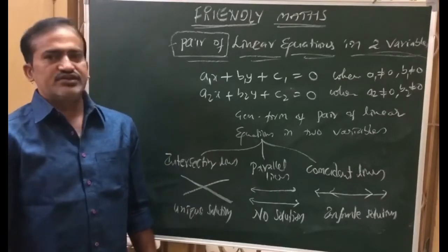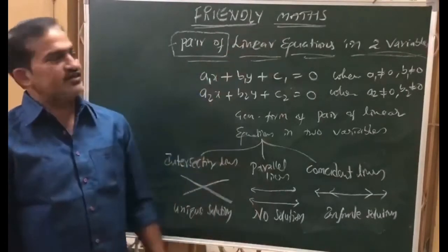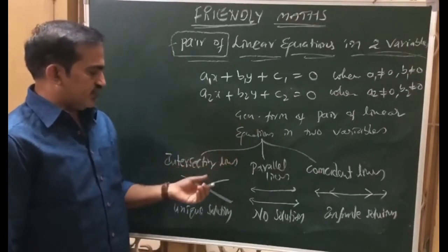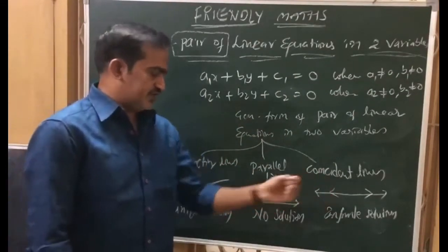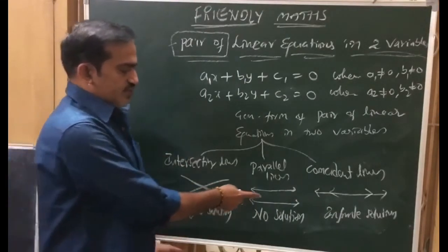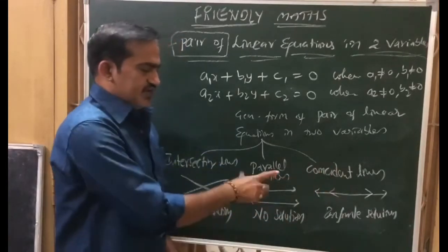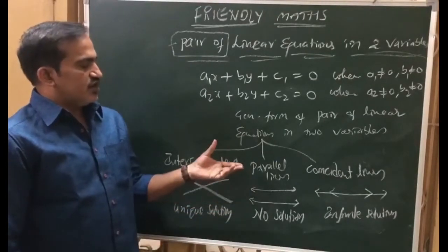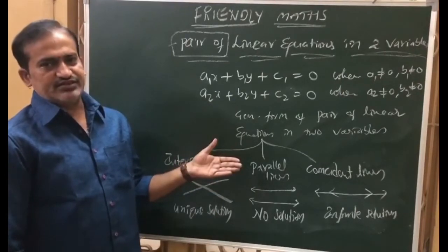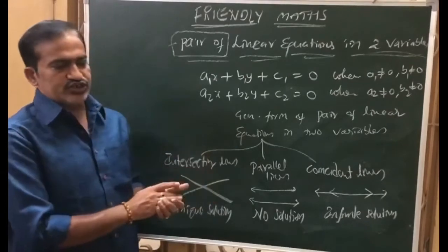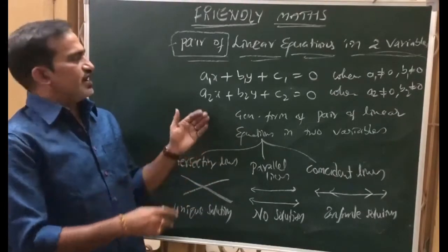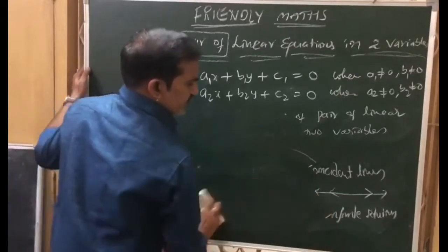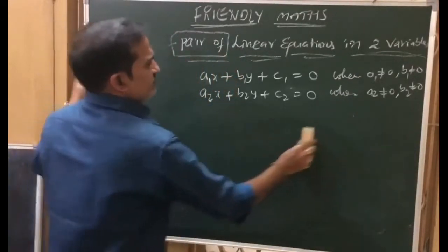Welcome to Friendly Maths channel. In the last video we discussed about the pair of linear equations. Generally a pair of linear equations can have three different properties: they may be intersecting, having a unique solution; they may be parallel, having no solution; and they may be coincident, having infinite solutions. Now, without using a graph or solution, we have to know which type of lines are given by observing the equations — that is our today's topic. It is a very important topic; there is a compulsory question, it may be short answer or long answer.